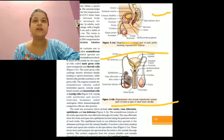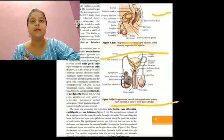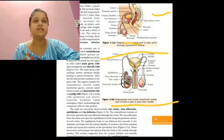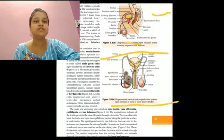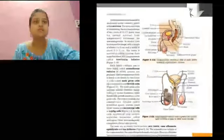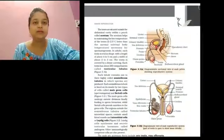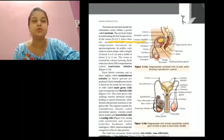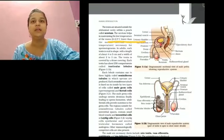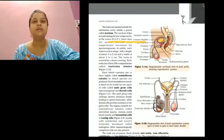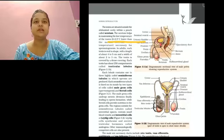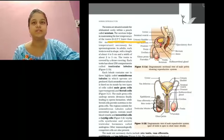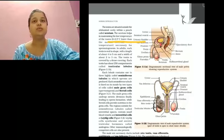Testes are placed outside the abdominal cavity as the main temperature is 2 to 2.5 degrees lower than the body temperature. The lower temperature in the testes is required for spermatogenesis, as normal human body temperature can lead to mutations in the sperm.